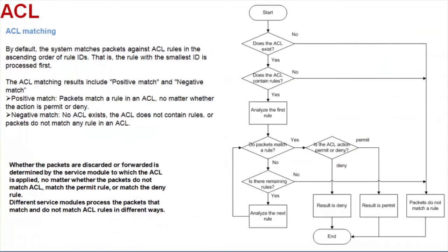Let's see how packets match the ACL rules. By default, the system matches packets against ACL rules in the ascending order of rule IDs — that is, the rule with the smallest ID number is processed first. The ACL matching results include positive match and negative match. A positive match means packets match a rule in an ACL, no matter whether the action is permit or deny. A negative match means no ACL exists, the ACL does not contain rules, or packets do not match any rule in an ACL.